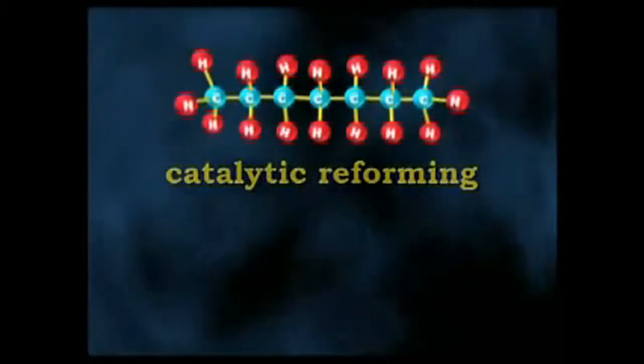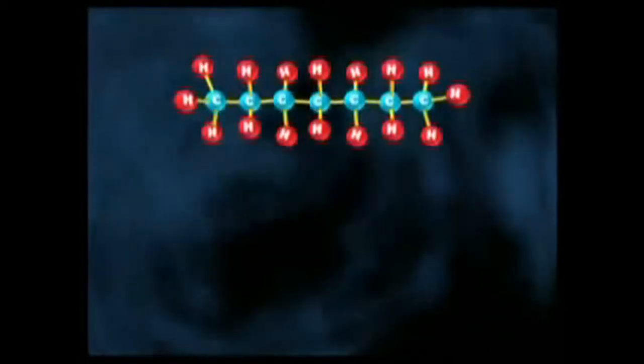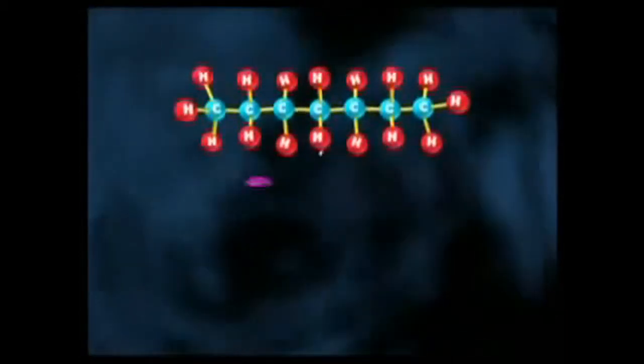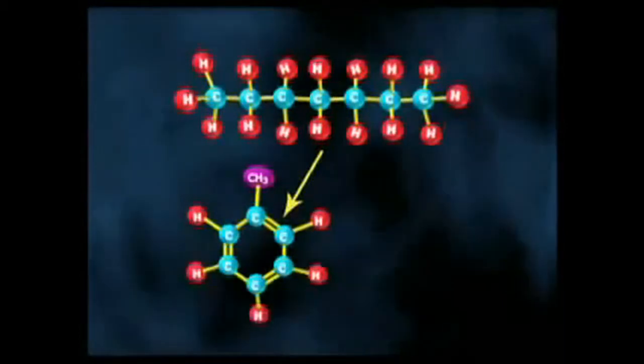When heat is applied in the presence of a platinum catalyst, short carbon chain hydrocarbons can bind to form aromatics, used in making chemicals.